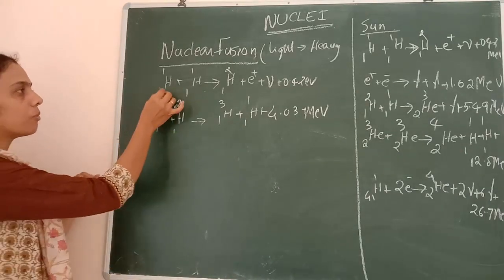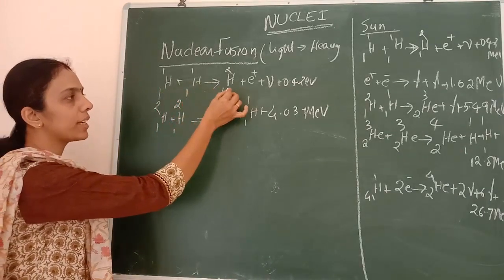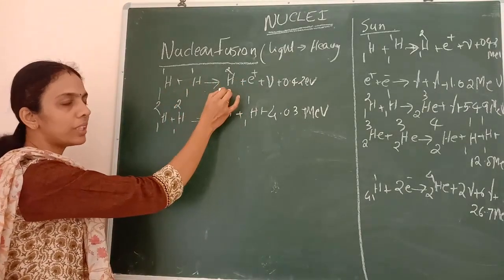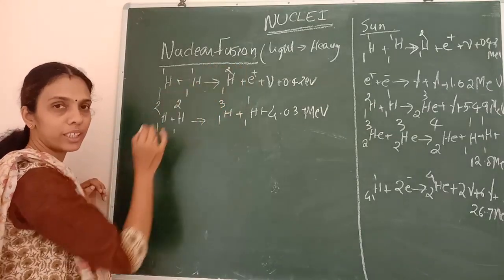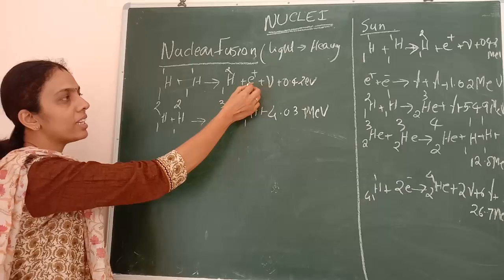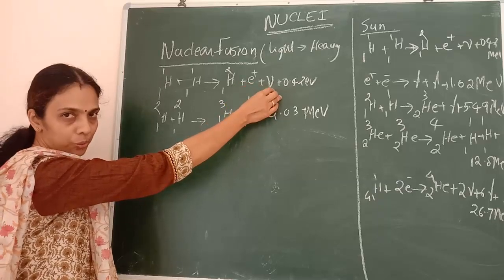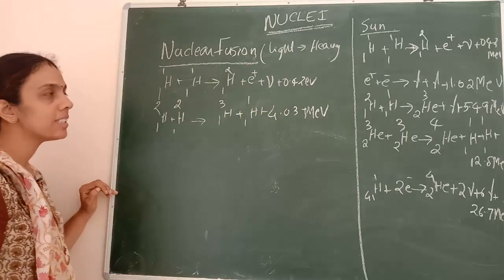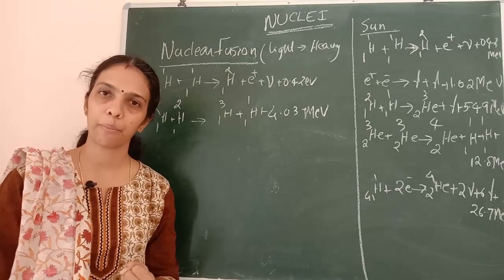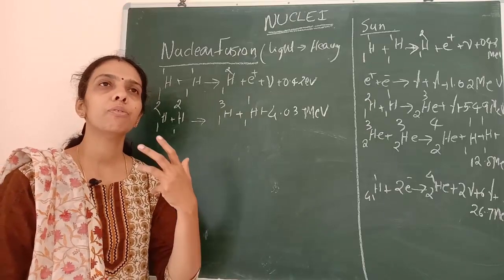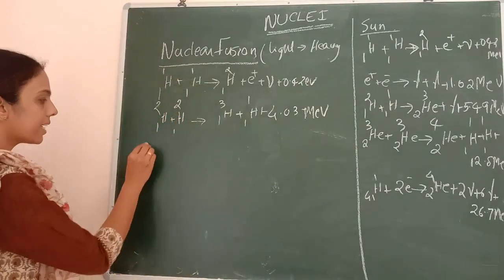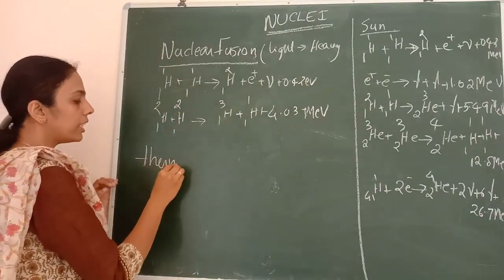One proton and another proton together will form deuterium — an isotope of hydrogen — releasing a beta-plus particle, a neutrino, and some amount of energy. This is a fusion reaction. If nuclear fusion happens with the help of temperature, we call it thermonuclear fusion.